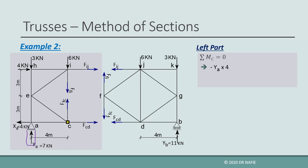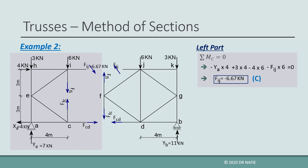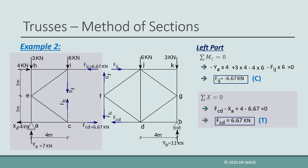The moment equation includes four terms: YA multiplied by a 4 m arm clockwise negative; the 3 kN vertical force multiplied by a 6 m arm clockwise negative; the 4 kN horizontal force multiplied by a 6 m arm clockwise negative; and the force in IJ multiplied by a 6 m arm clockwise negative. All terms sum to zero, giving negative 6.67 kN for the force in IJ — so it is compression and its direction should be reversed. By applying sigma X equals zero, the force in CD is evaluated to be positive 6.67 kN, so it is tension. The two remaining unknowns in FC and FI cannot be solved from this cut, but they are not requested in this problem.